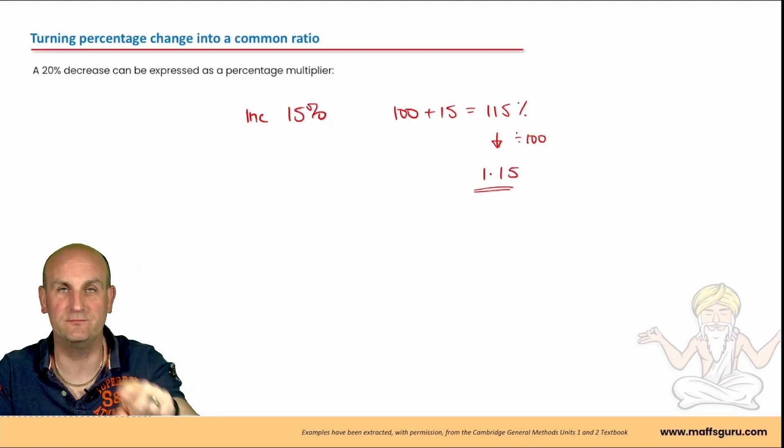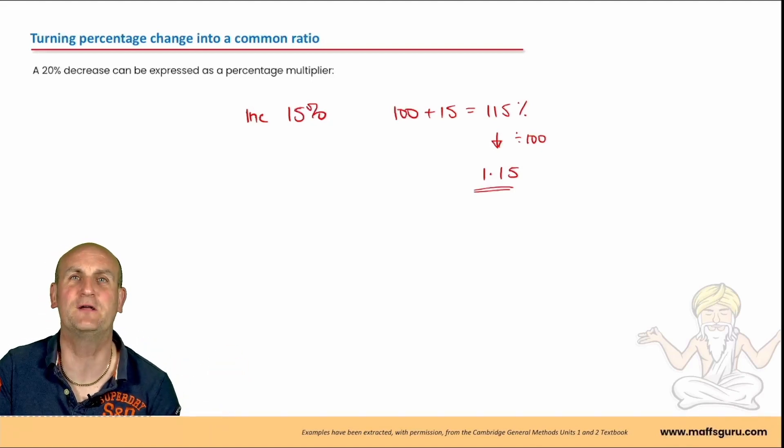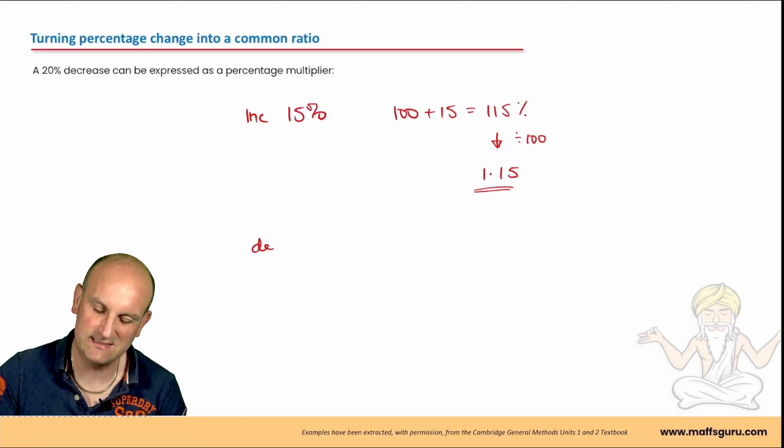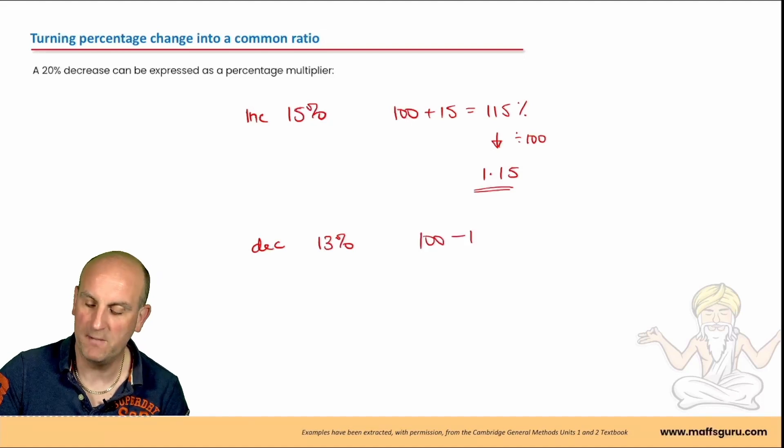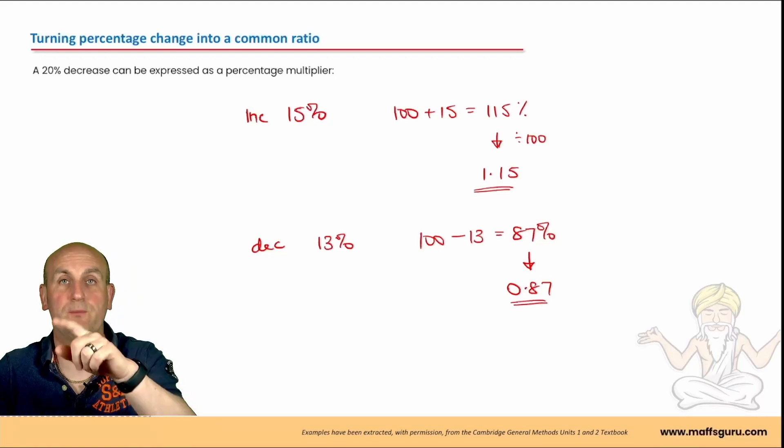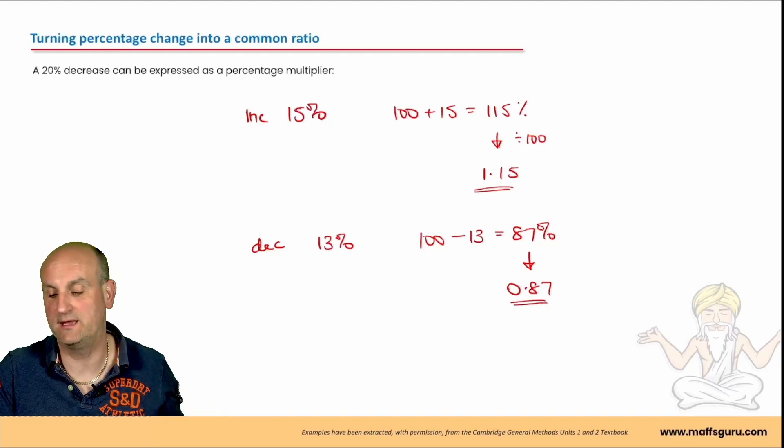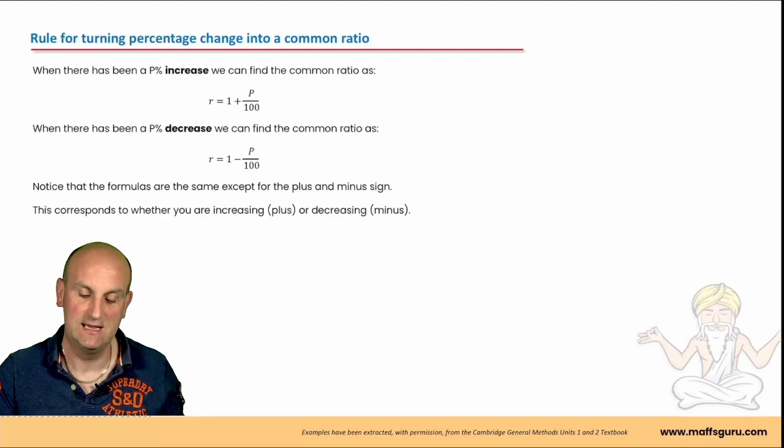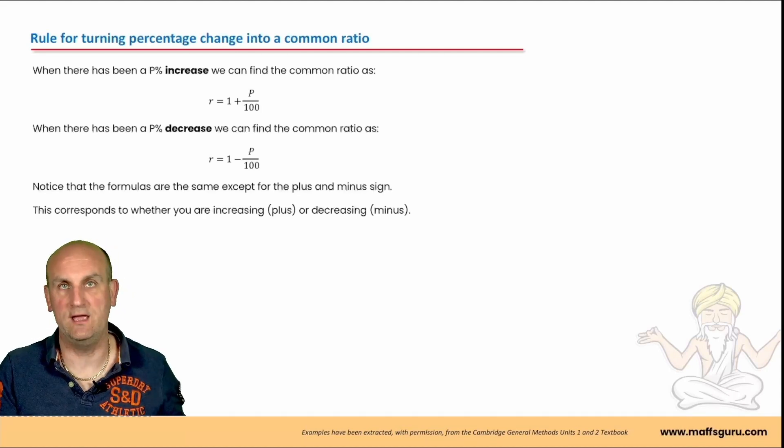Because if I'm multiplying to go from term to term by the same number, it's also a common multiplier. What about a decrease of 13%? Well, we're going to do 100 minus 13, which is going to give me 87%. Divide that by 100 is going to give me a multiplier of 0.87. So when I multiply by 0.87, the numbers are going to get less and less. They're going to decrease by 87% each time.